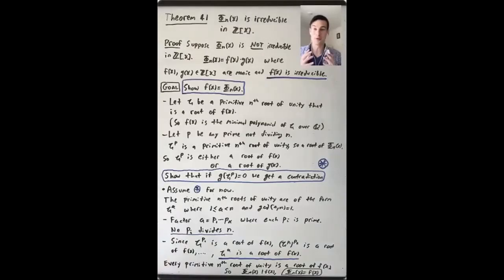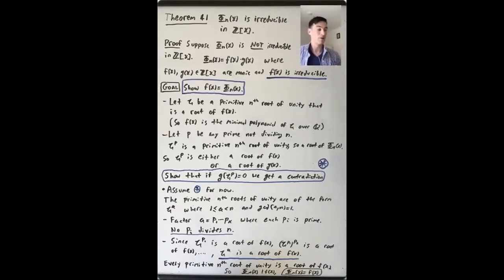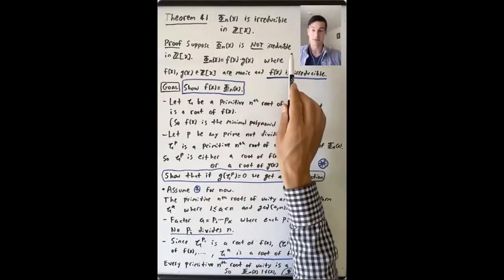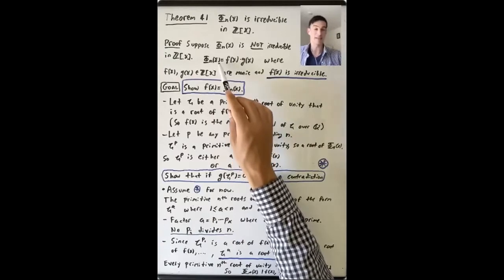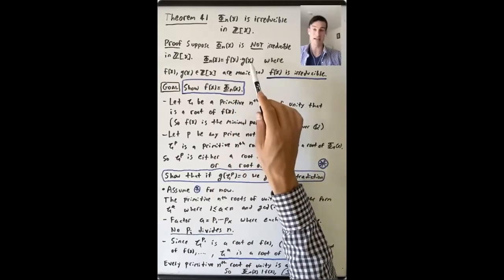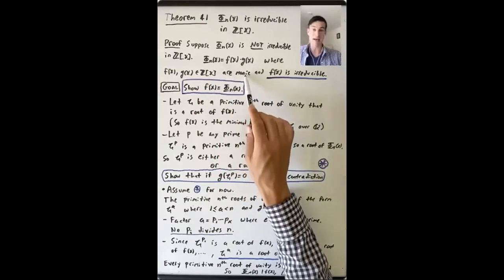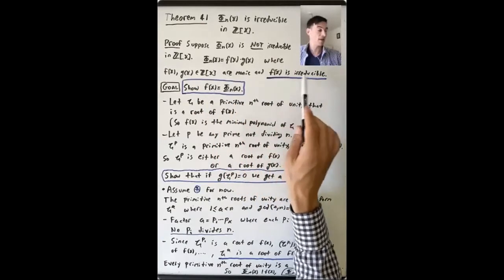In this last video, we'll prove that the n-th cyclotomic polynomial is irreducible in Z[x]. This is a monic polynomial, so irreducible in Z[x] also means irreducible in Q[x]. This was something that followed directly from Gauss's lemma. So let's suppose that the n-th cyclotomic polynomial is not irreducible in Z[x], which means it equals f(x) times g(x), where f(x) and g(x) are both monic in Z[x], and f(x) is irreducible.